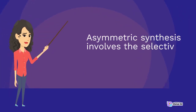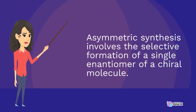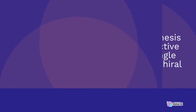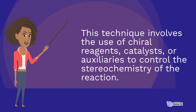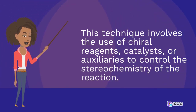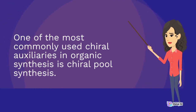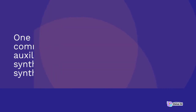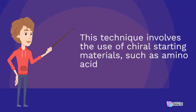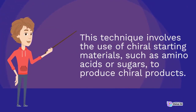Asymmetric synthesis involves the selective formation of a single enantiomer of a chiral molecule. This technique involves the use of chiral reagents, catalysts, or auxiliaries to control the stereochemistry of the reaction. One of the most commonly used chiral auxiliaries in organic synthesis is chiral pool synthesis, which involves the use of chiral starting materials, such as amino acids or sugars, to produce chiral products.